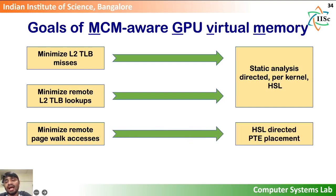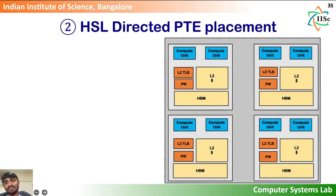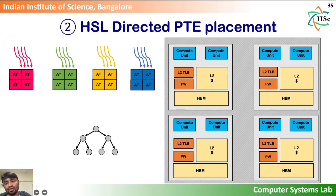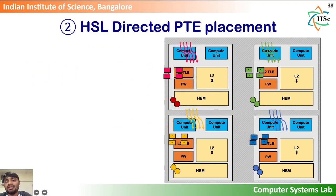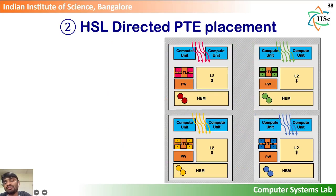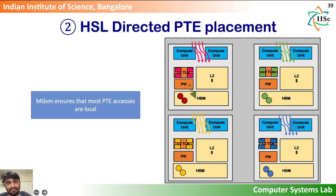The second part of MGVM, HSL-directed PTE placement, tackles remote memory accesses due to page walks. With HSL-directed PTE placement, our goal is to ensure that a page walker will mostly access local memory. The hash function or HSL determines the TLB slice that services a given virtual address range, and therefore also determines the page walkers that service a given virtual address range. MGVM places PTEs — particularly the leaf-level PTEs — on the same chiplet where the corresponding TLB entries are hashed to. Thus, the page table walkers responsible for servicing a given virtual address range will find the corresponding PTEs on the same chiplet. MGVM thereby achieves the best of both private and shared TLB configurations, while also minimizing remote PTE accesses.